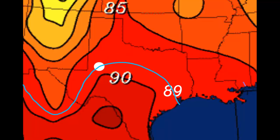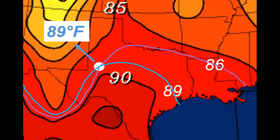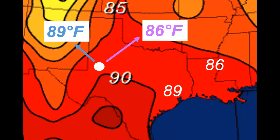Well, since this point is on the 89 degree isotherm, it must be the case that the temperature at this place is 89 degrees. However, this place is also on the 86 degree isotherm. Therefore, it also has a temperature of 86 degrees.